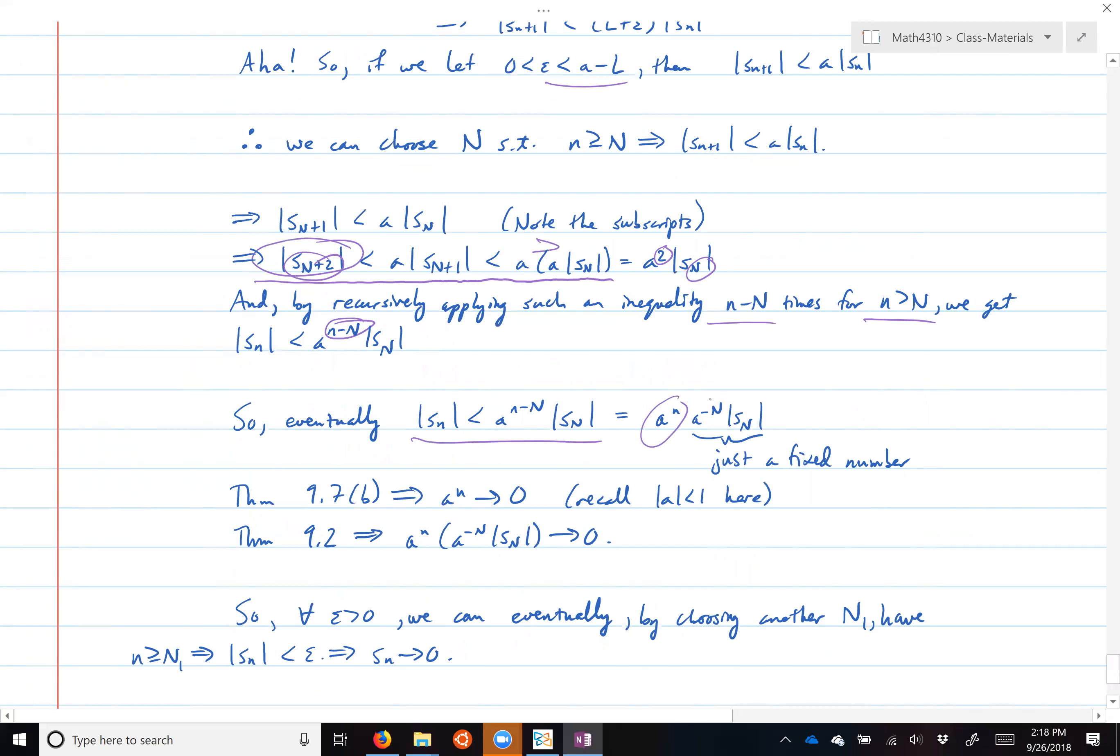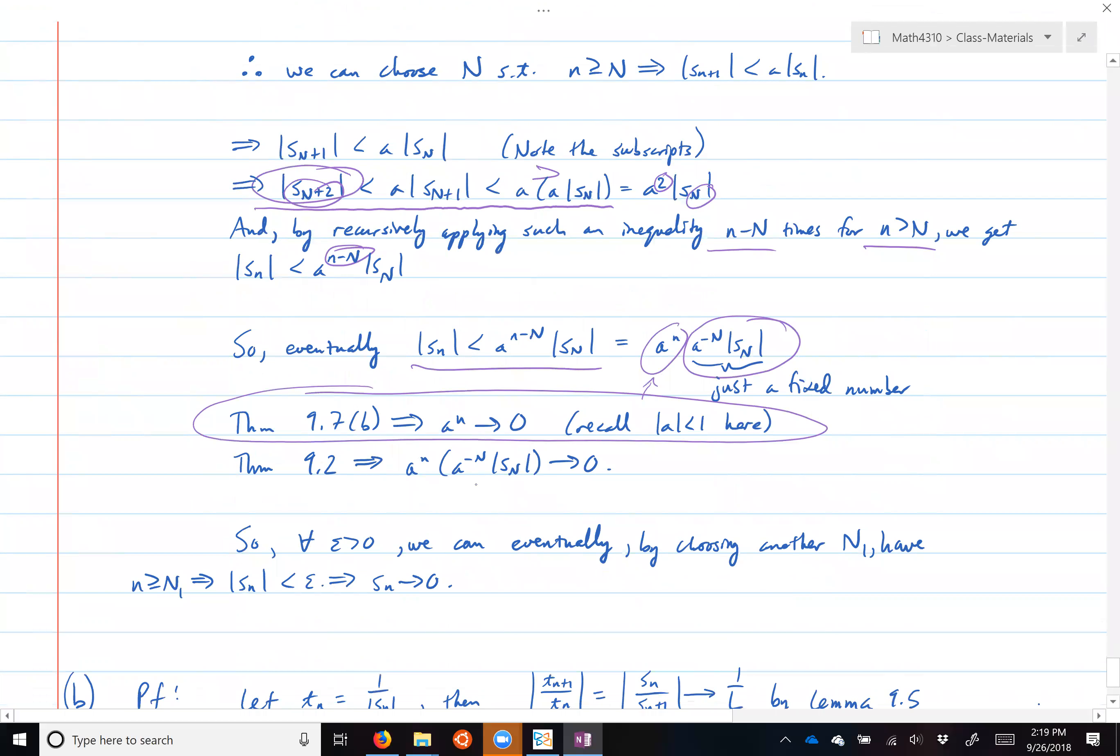So then you say, what does that mean? Factor out A^n, and then I just say this number right here is just small. And this number is going to, can only be less than one, because in fact it goes to zero, because absolute value of A is less than one.